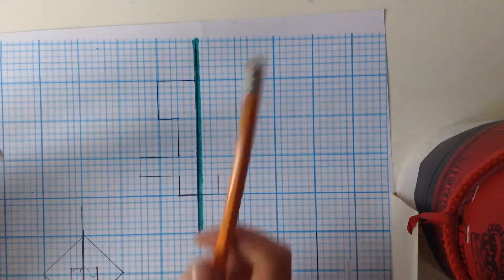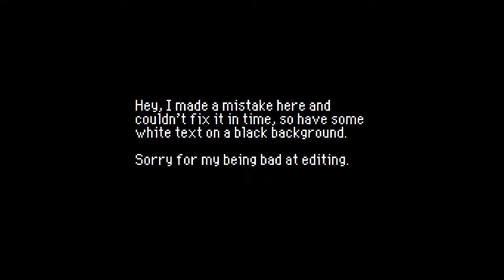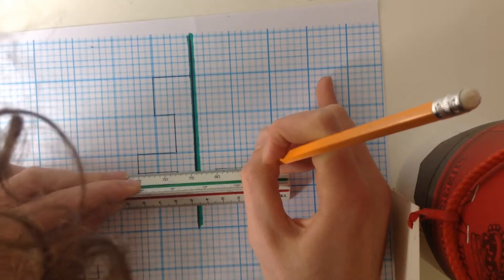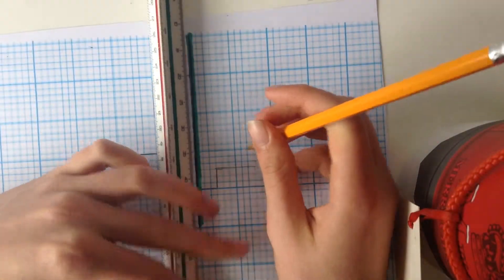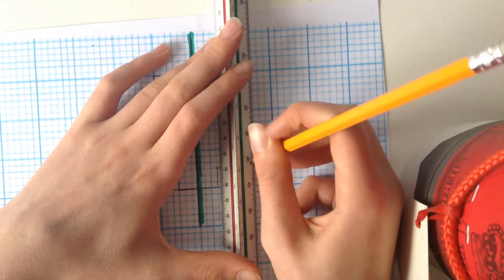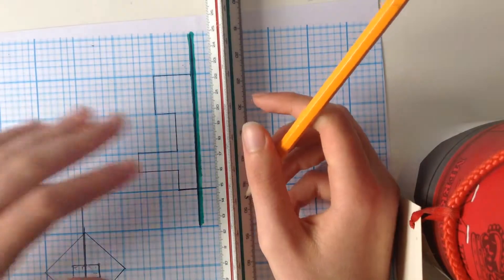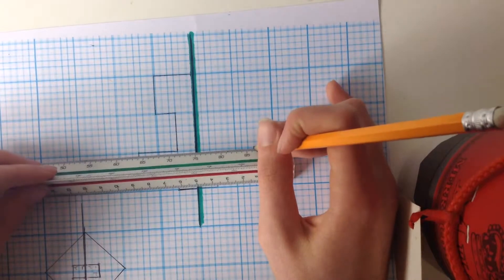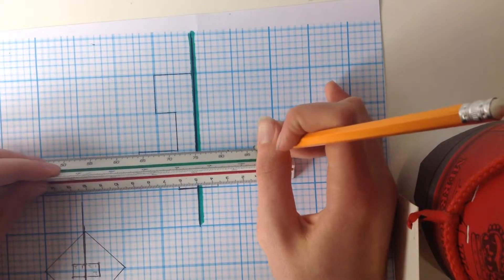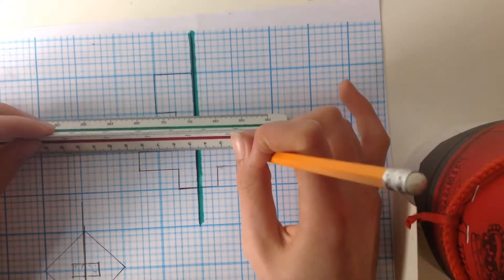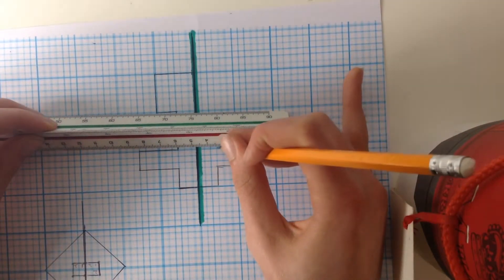It goes up for one, two, three, four, five, six. Yep, and then it goes up for three. Up for three, and then it goes back down here for six. And that will go just about there. So, that's six squares down.